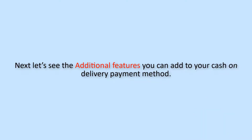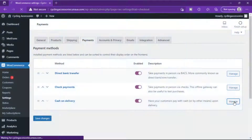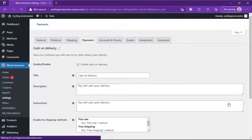So this is how you can add a cash on delivery payment method to your e-commerce website. Now next, let's see the additional features you can add to your cash on delivery payment method. Go to e-commerce Settings, then Payment, and click Manage.